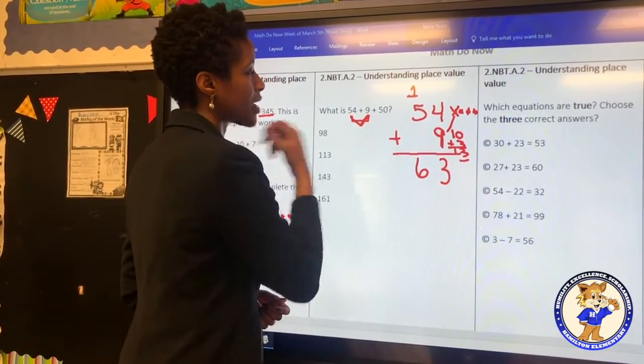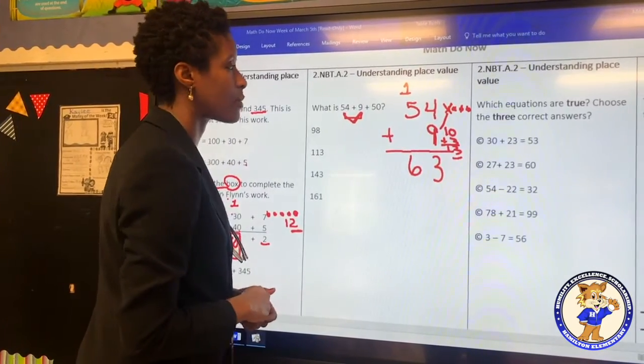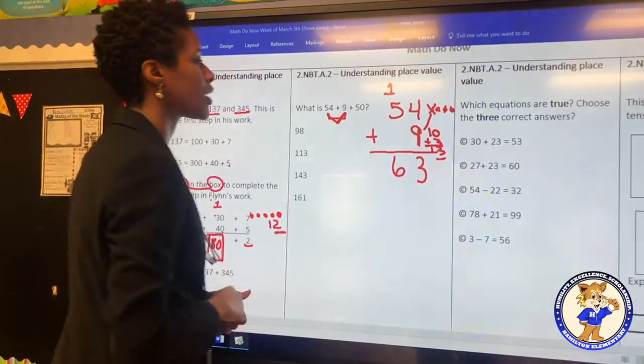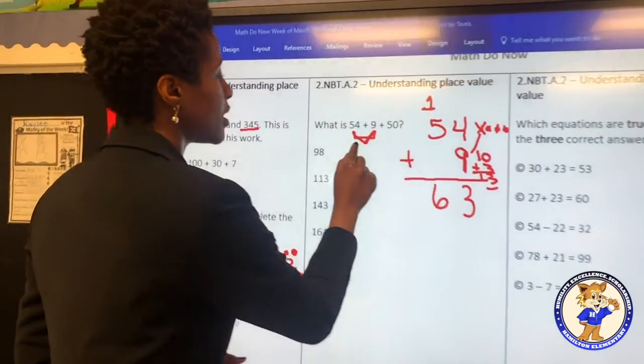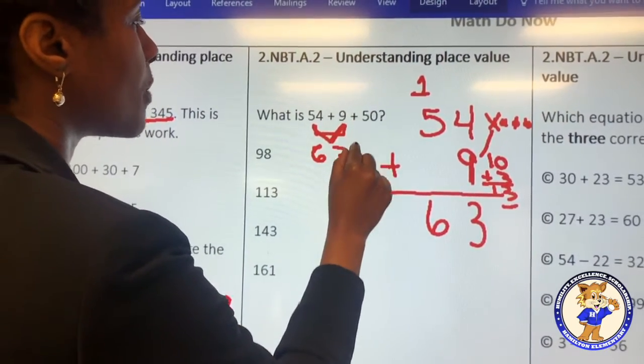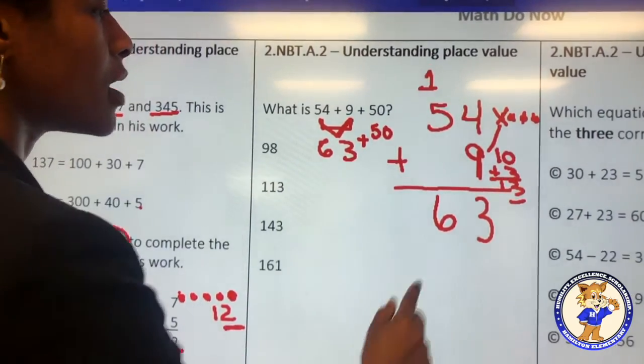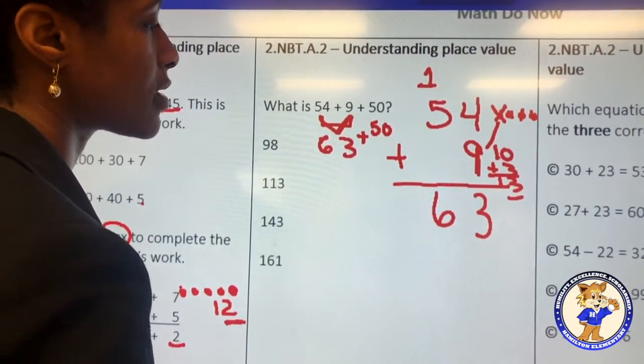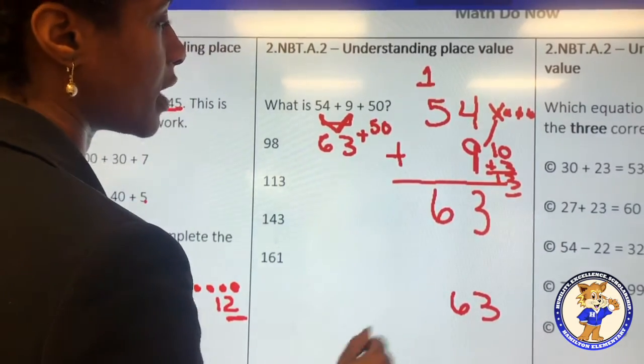I know that because I can put 5, the largest number in my head and count up 1 and that will give us 6. We are still not done with this problem because we know that 54 plus 9 is 63. However, we must add 50. We can keep the problem like this or we can come and start a whole new problem underneath it. Just give yourself some space.